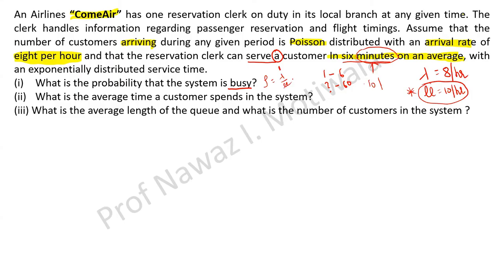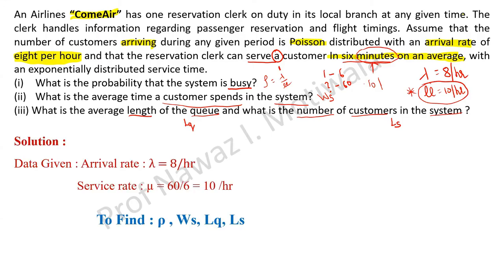What is the average time a customer spends in the system? Time is asked and system is mentioned, so we need to find Ws. What is the average length of the queue? That is simply Lq. And what is the number of customers in the system? Number means length, and system is mentioned, so that will be Ls. So we need to find rho, Ws, Lq, and Ls. Now it is becoming very easy — all the formulas have been given, so let us go one by one.